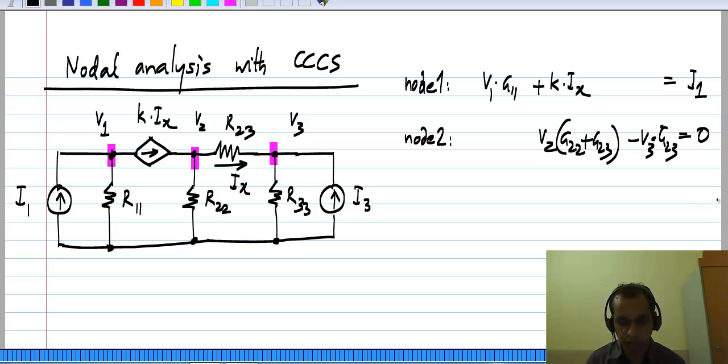because there is no independent current source pumping current into this node. We also have this term k times i_x, and that is pushing into the node, so current flowing out of the node will be minus k times i_x.